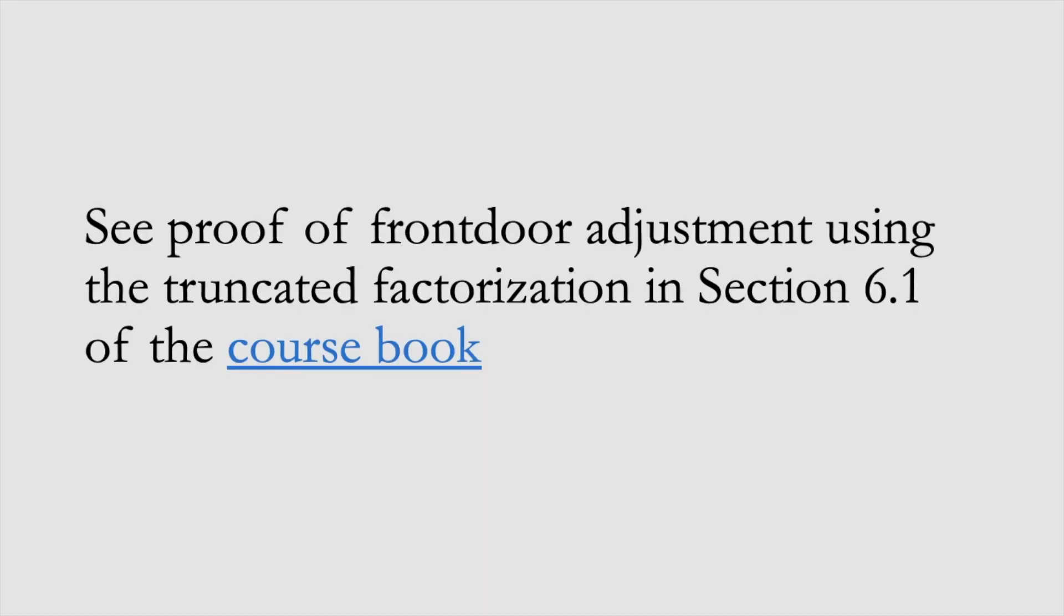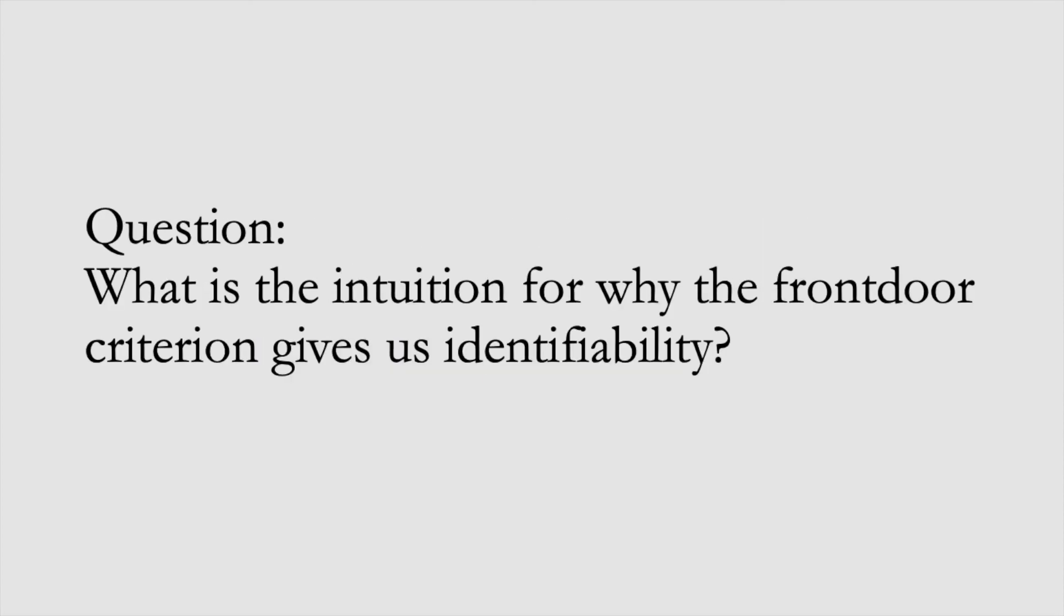If you want to see a full proof of the front door adjustment using the truncated factorization, then check out section 6.1 in the course book. The question for this section is, what is the intuition for why the front door criterion gives us identifiability?